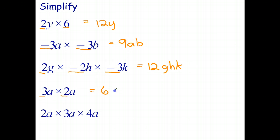We could write 6aa, which is correct. But again, the simplest way to write aa is a to the power of 2. So that simplifies to 6a to the power of 2.